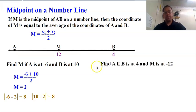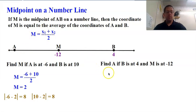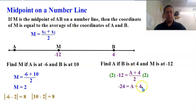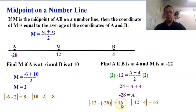Now we're going to do this slightly differently. What if we want to find A, given that B is at 4 and M is at negative 12? This time they gave us the midpoint and said, find this other endpoint. We plug it into the formula: M = (A + X2) / 2, so −12 = (A + 4) / 2. Multiply both sides by 2: −24 = A + 4. Subtract 4 from both sides: A is at negative 28. Testing the distance confirms it is a distance of 16 either way, so this is our midpoint.